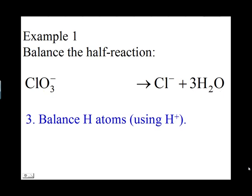The next step is to balance hydrogen atoms. There are no hydrogen atoms on the left side. On the right side, three molecules of water contain three times two, or six hydrogen atoms. Six hydrogen atoms must be added to the left side by adding six H+ ions. There are now six hydrogen atoms on both sides.